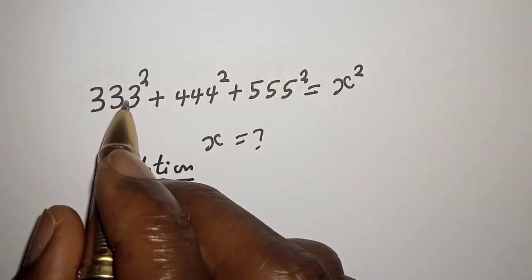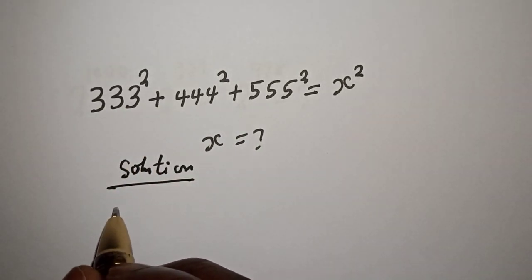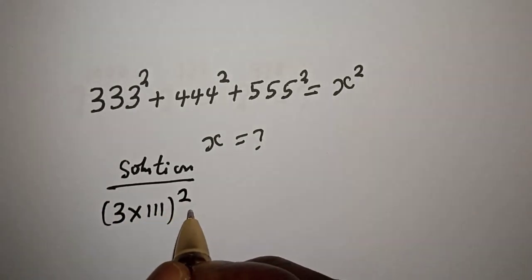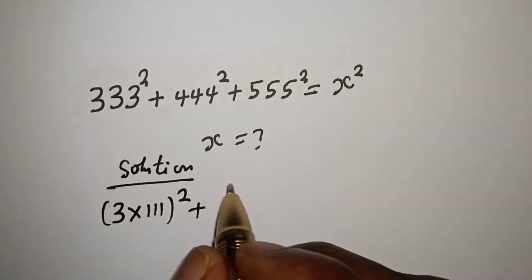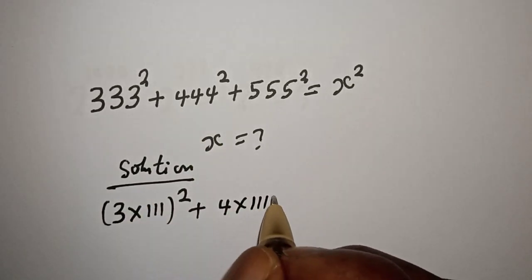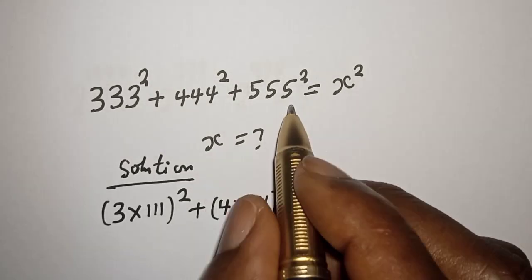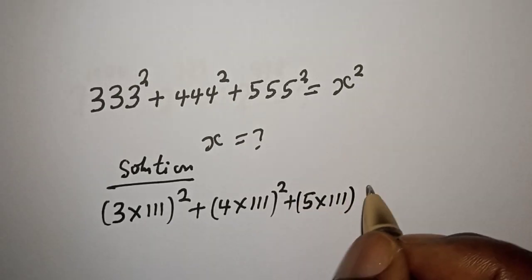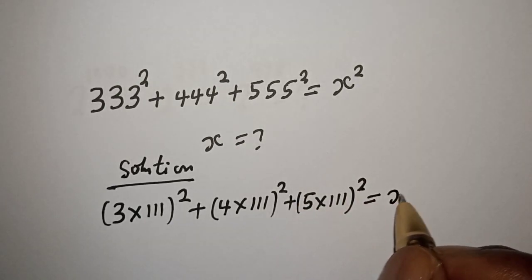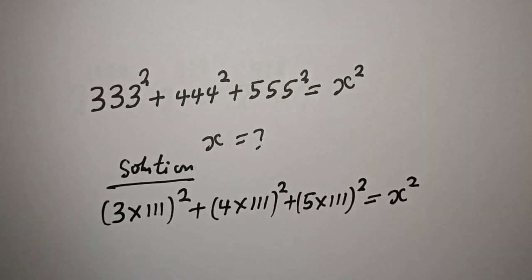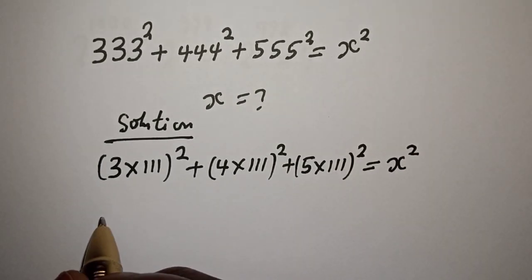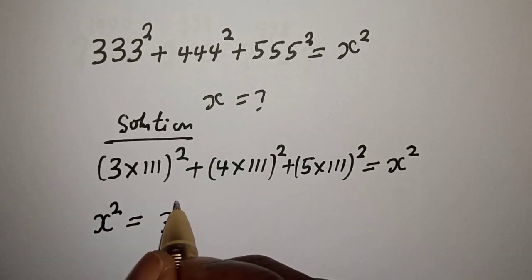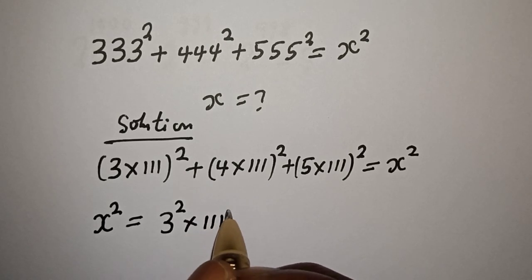333 squared can be written as 3 multiplied by 111 squared, plus 444 squared can be written as 4 multiplied by 111 squared, plus 555 squared can be written as 5 multiplied by 111 squared, is equal to s squared.